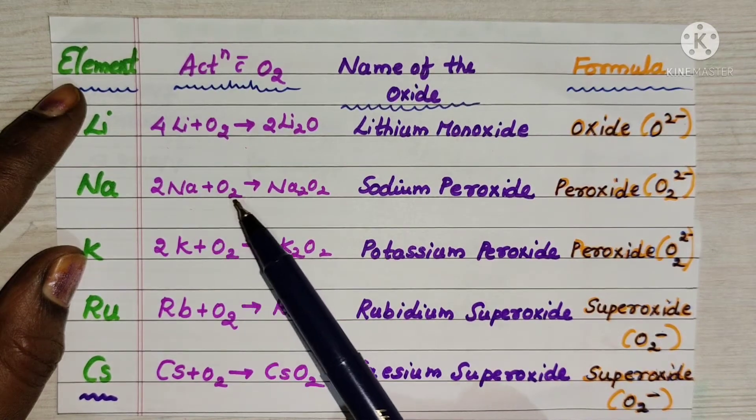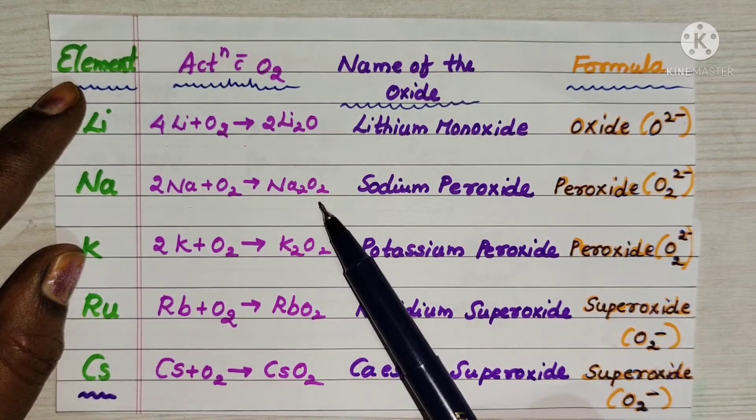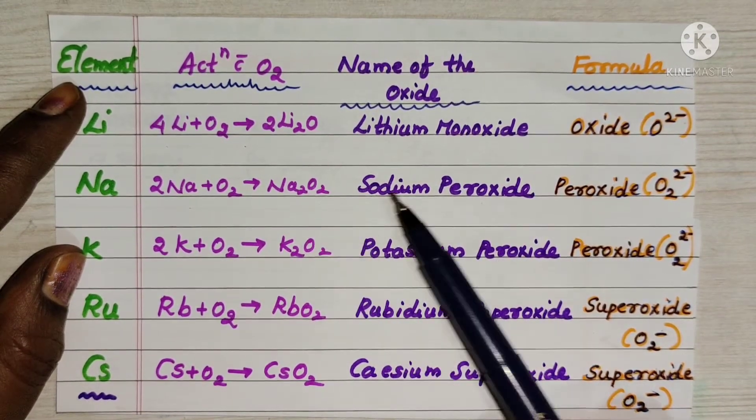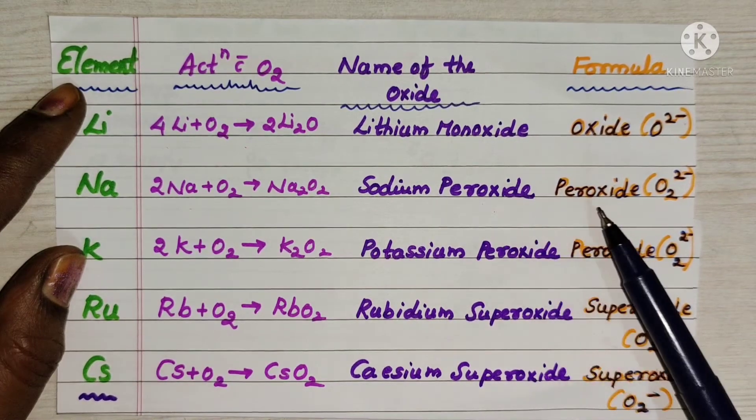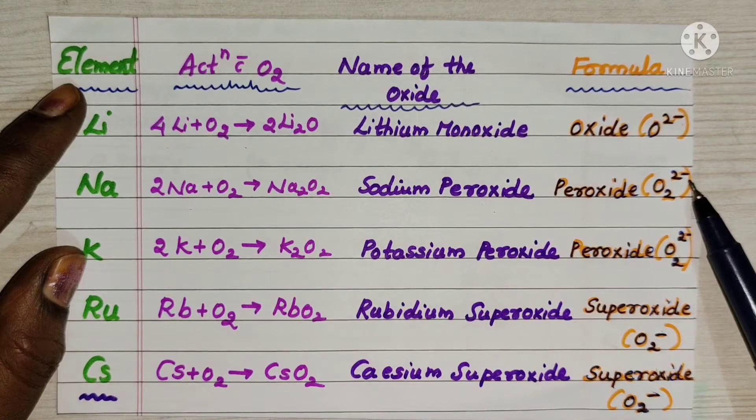Sodium when reacts with oxygen forms Na2O2. It is peroxide, nothing but sodium peroxide. Na2O2 is sodium peroxide. Peroxide formula is O2 power 2 minus, meaning oxygen has minus 1 charge.